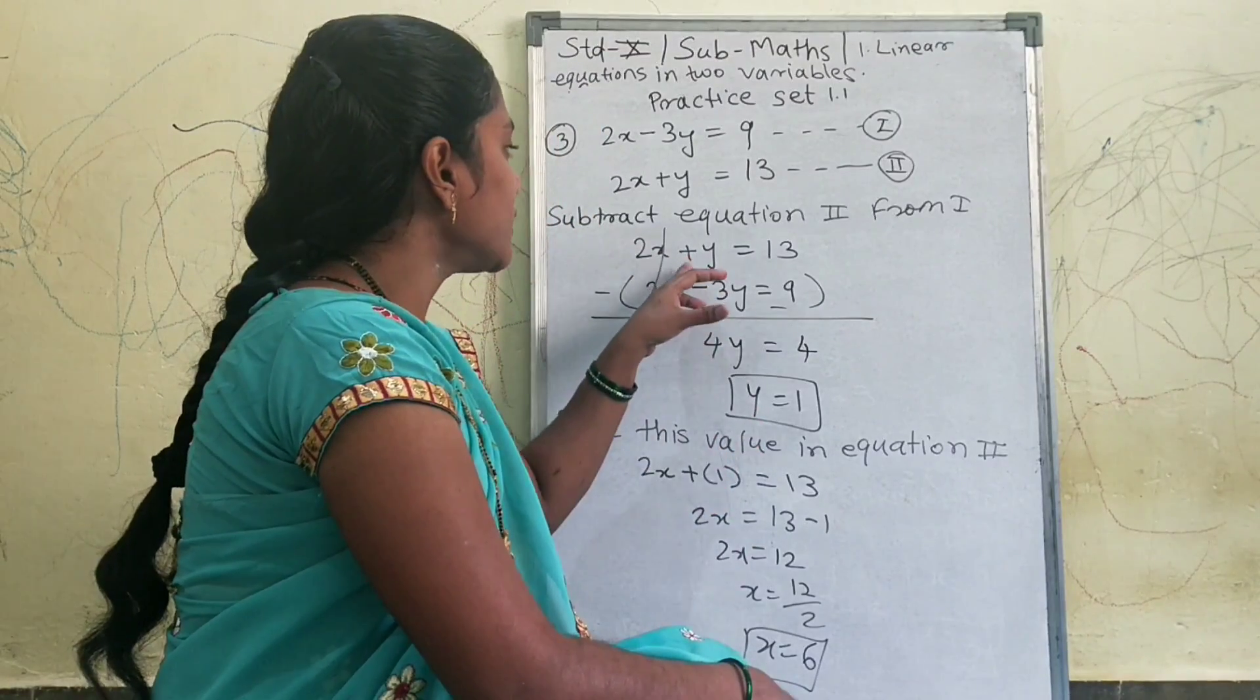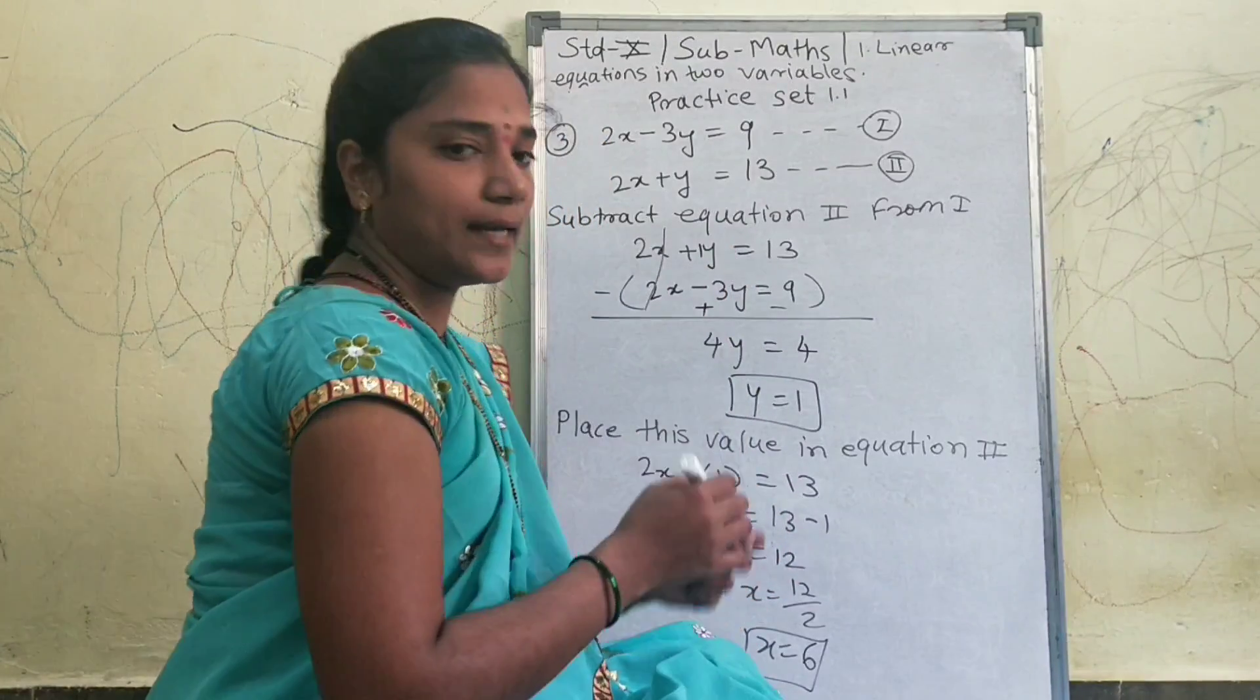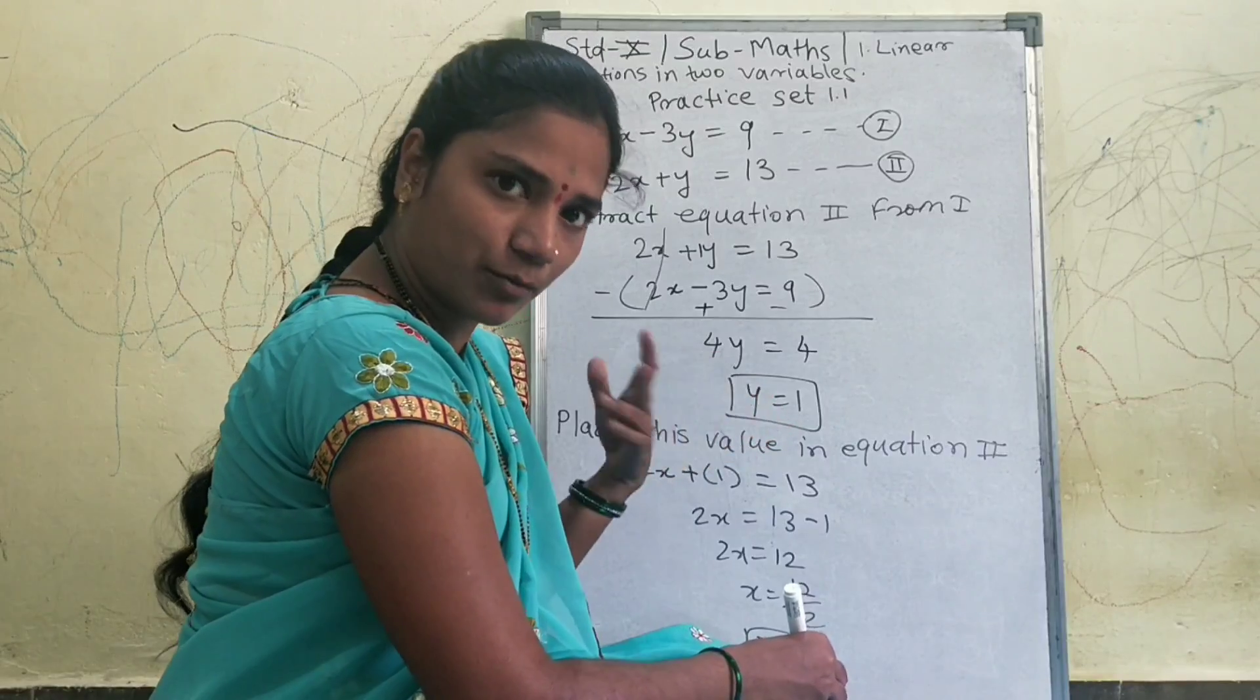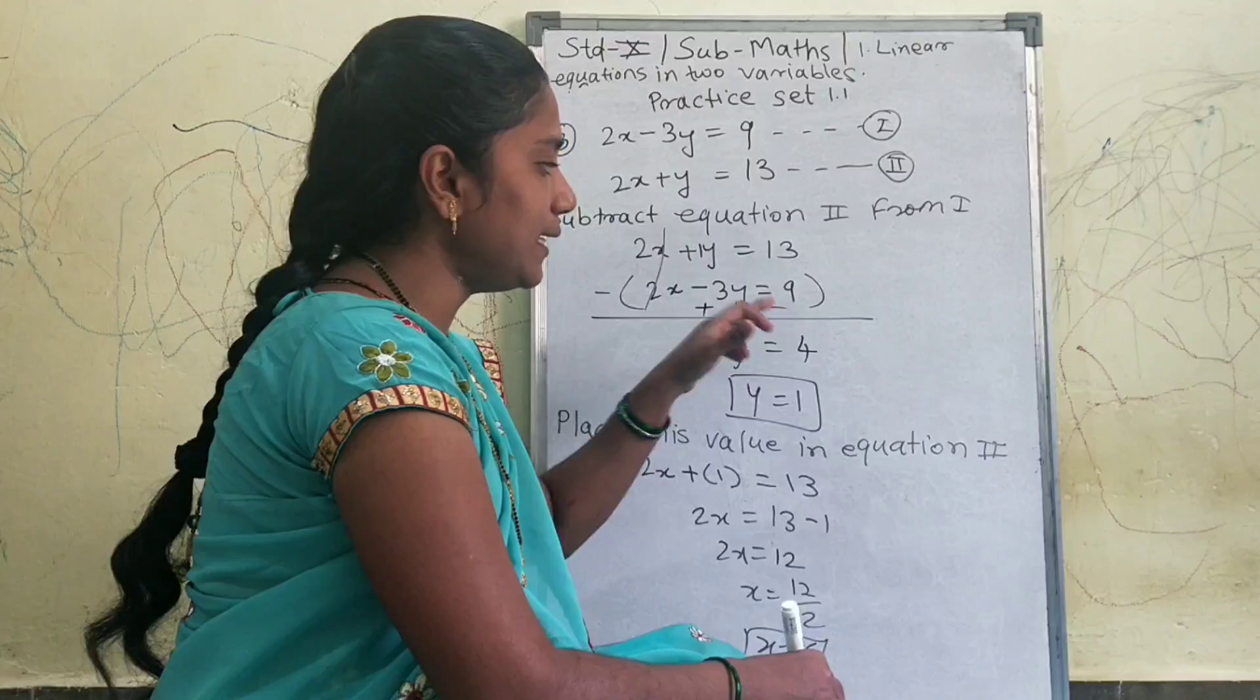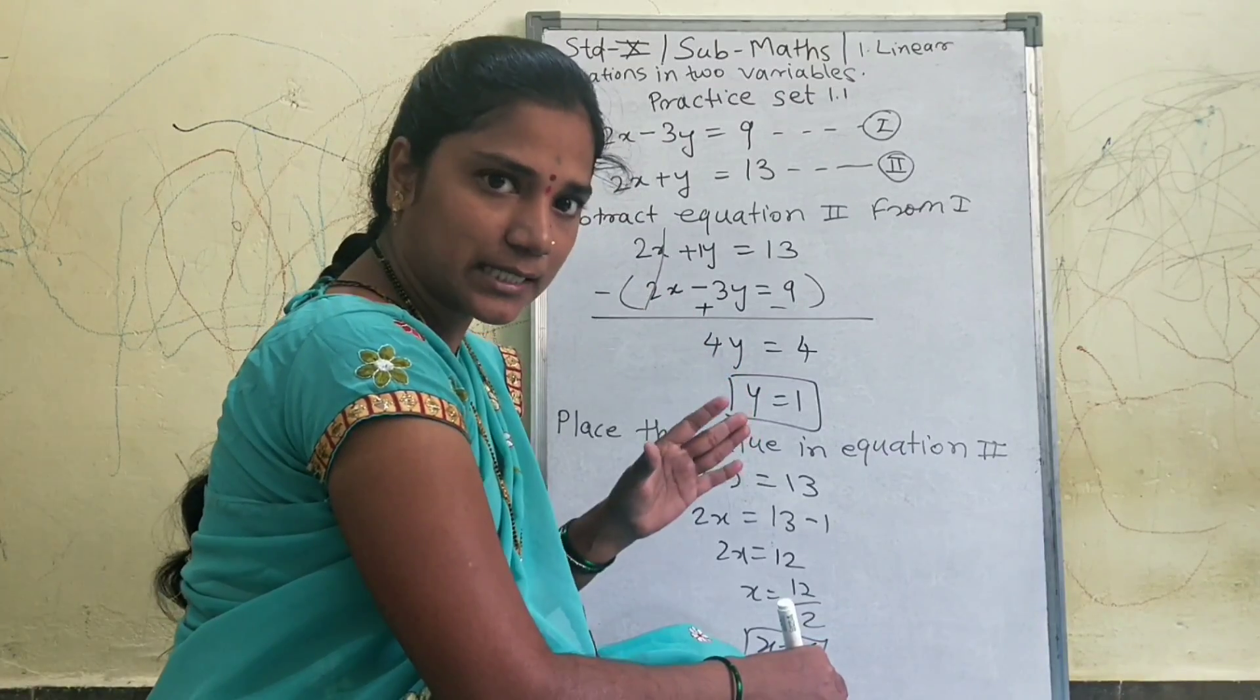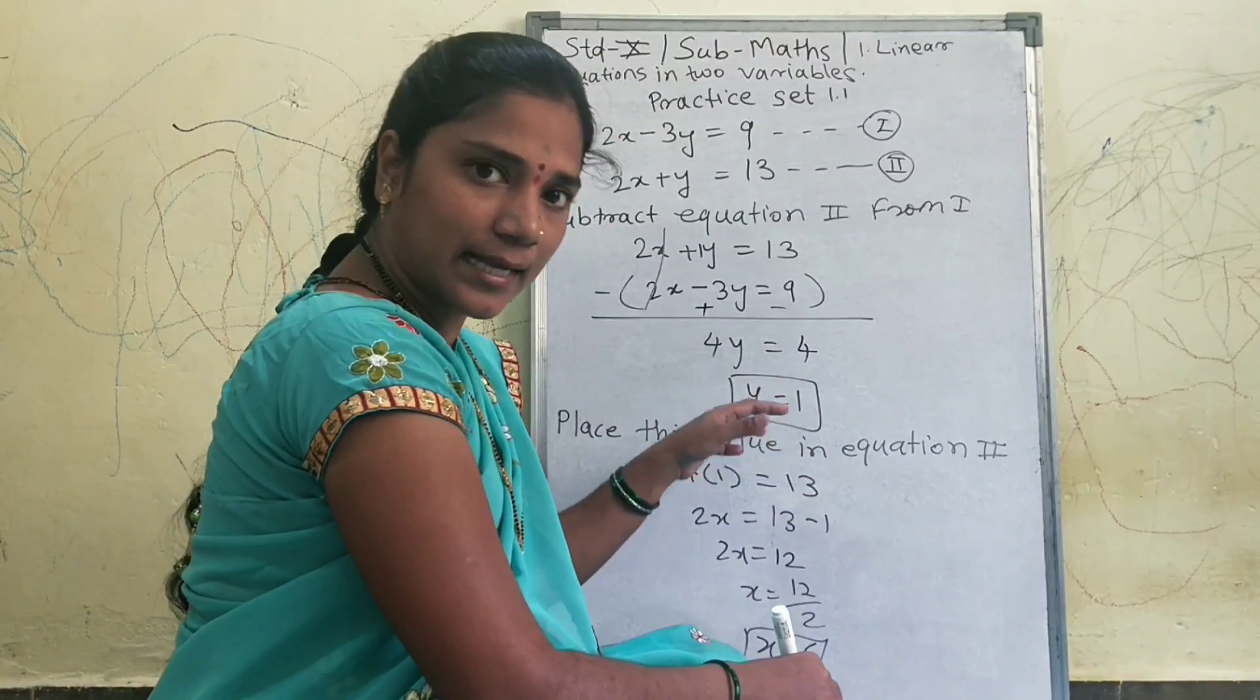Then minus minus will give plus sign, 3 plus 1 is 4. I write here 4y is equal to, subtraction will give us 13 minus 9 is equal to 4. So 4y, the multiplication sign is invisible.